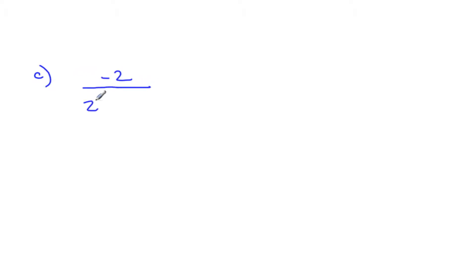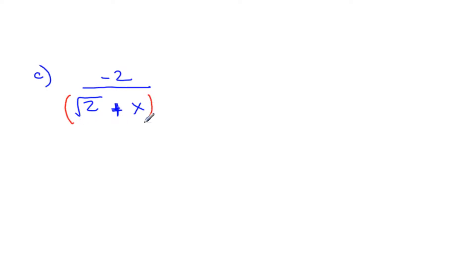Another example: negative 2 over 2 square root plus x. Tricky. We need to think about that denominator — it's really kind of in brackets, isn't it? It's like negative 2 divided by all of that on the bottom; those brackets are implied. And when we've got plus signs rather than just all multiplications, it's a little bit trickier.